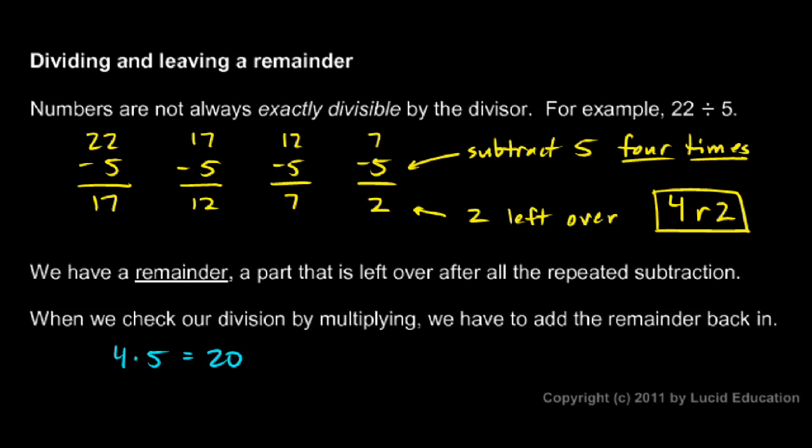4 times 5 is 20. And then we have to add in the remainder. 20 plus 2 is 22. And that gives us our original number, the 22.